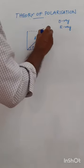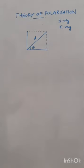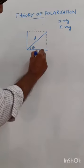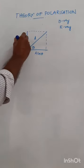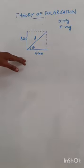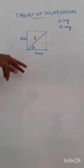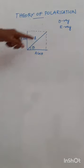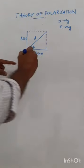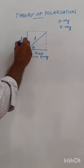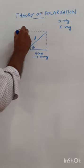This amplitude A can be resolved into two components — one horizontal component and one vertical component. The vertical component is A sin theta and the horizontal component is A cos theta. In a birefringent crystal the incident ray gets split into two, that is O ray and E ray. The extraordinary ray travels along the optic axis and the ordinary ray travels perpendicular to the optic axis.